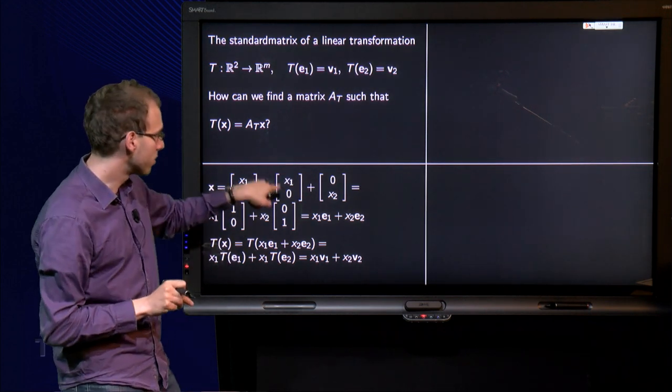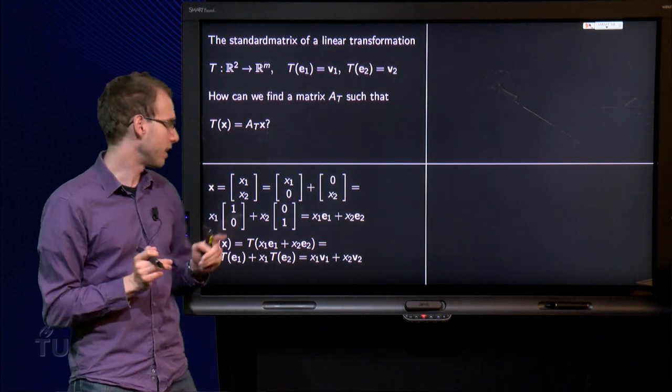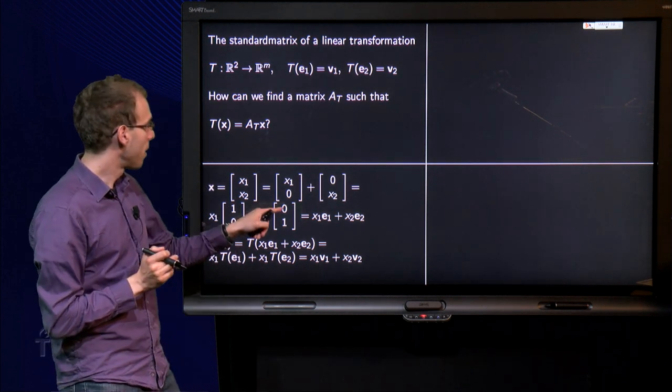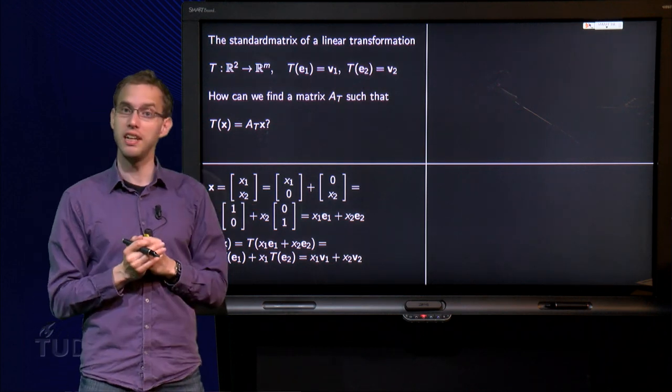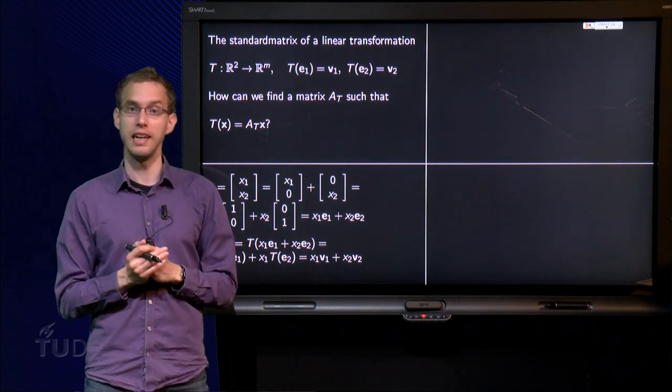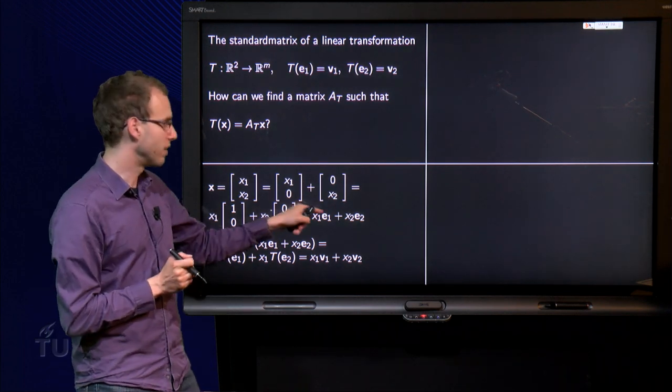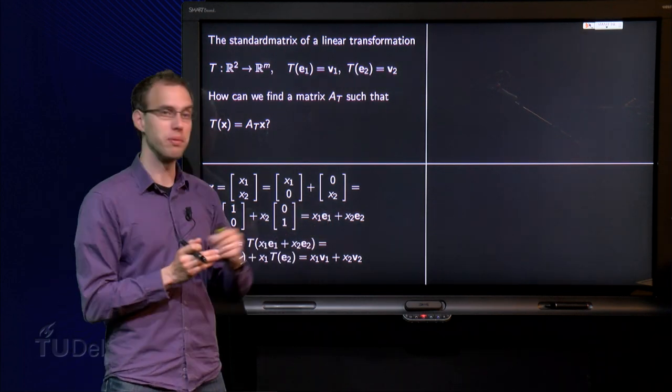We write it as X1, 0, plus 0, X2, like this. And then we can take out X1 and X2 as scalars. And then we see here we have got an E1 and here we have got an E2. So we can write an arbitrary X as X1 times E1 plus X2 times E2.